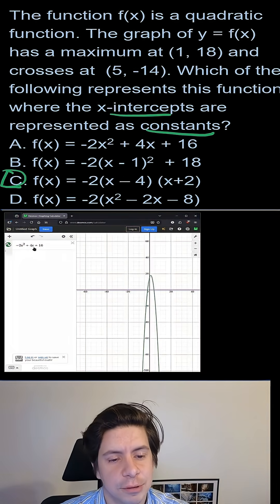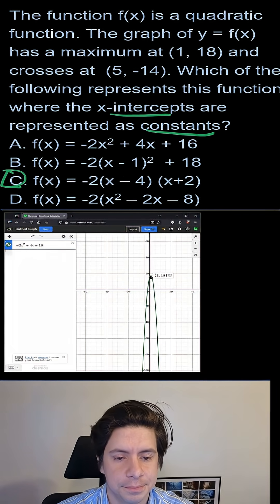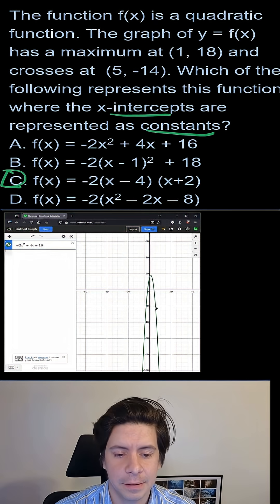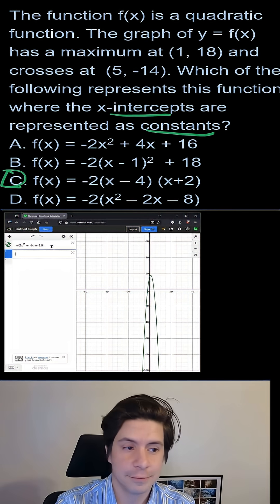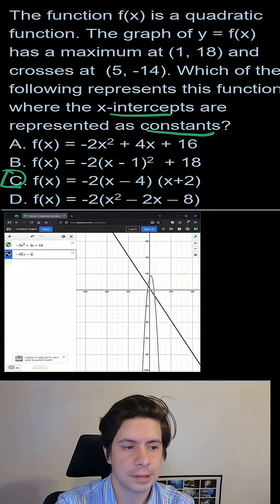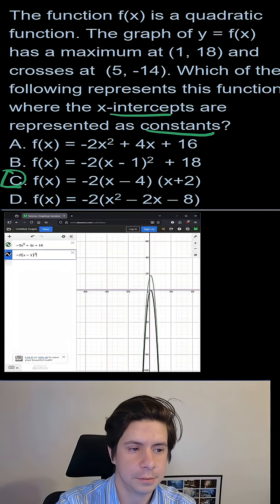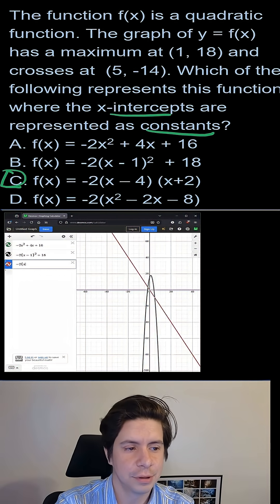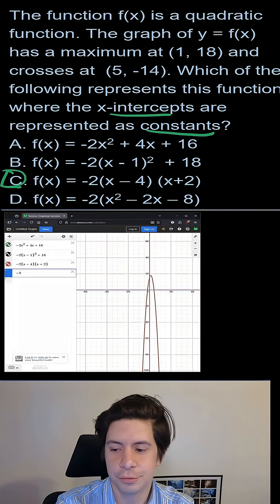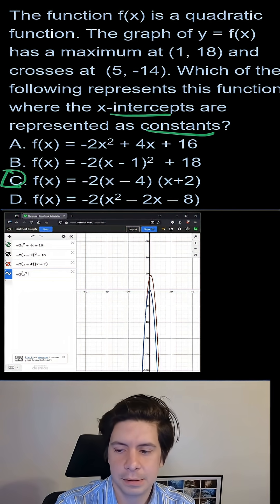So if we do -2x² + 4x + 16, we're going to get (1,18) and (5,-14). If you do -2(x - 1)² + 18, same thing. If we do -2(x - 4)(x + 2), same thing. And if we do -2(x² - 2x - 8), same thing.